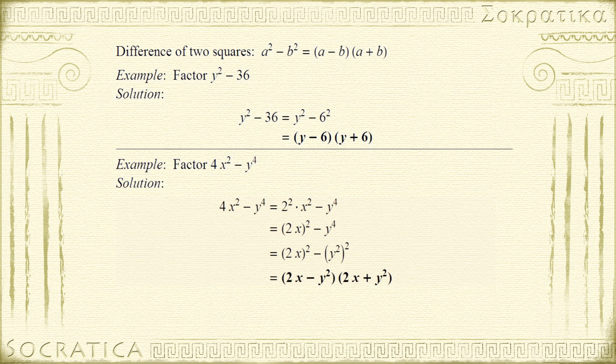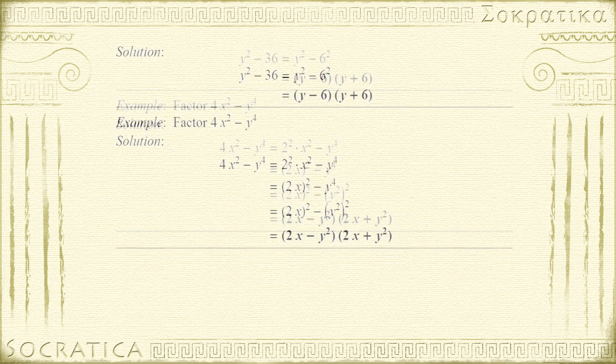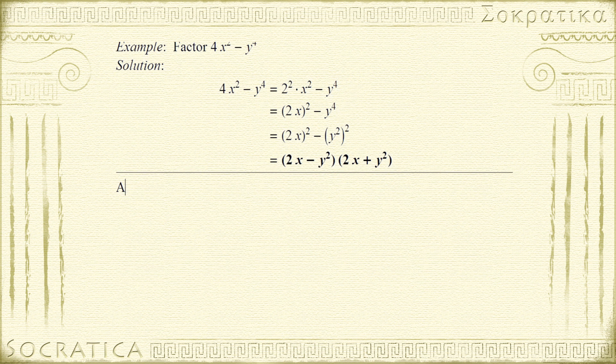I mentioned in the beginning that factoring helps you solve equations. So let's use this technique of factoring to solve an equation. We're going to solve the equation 9x² - 1 = 0. So let's begin by factoring the left-hand side.